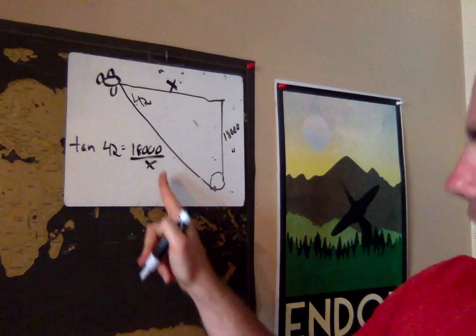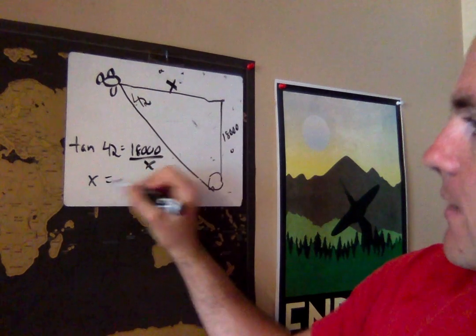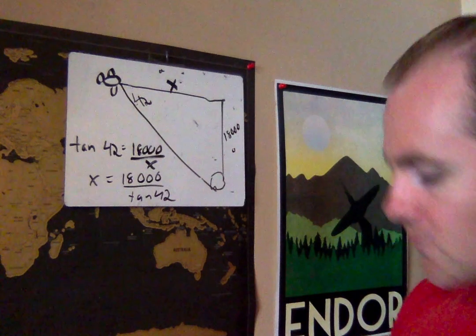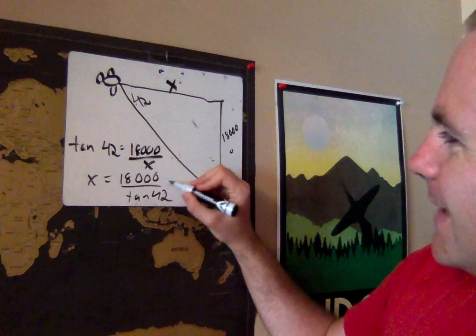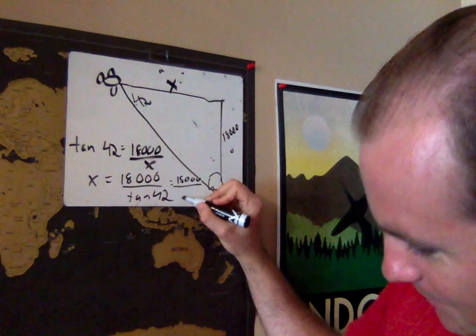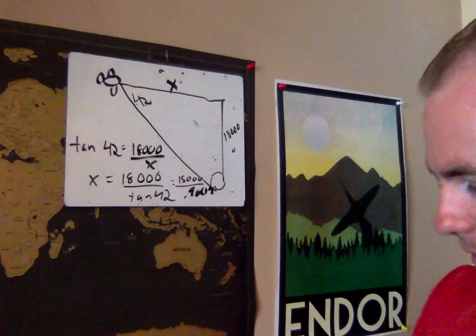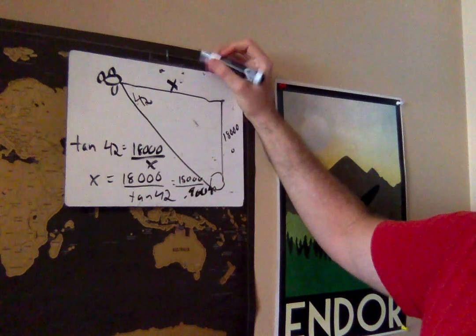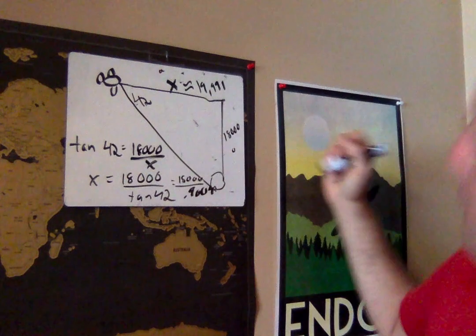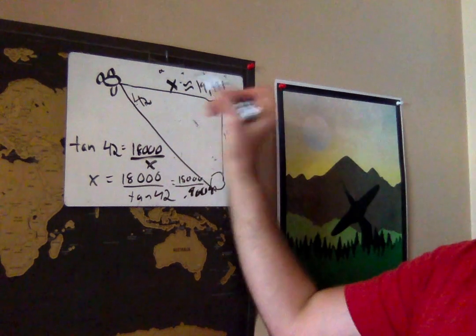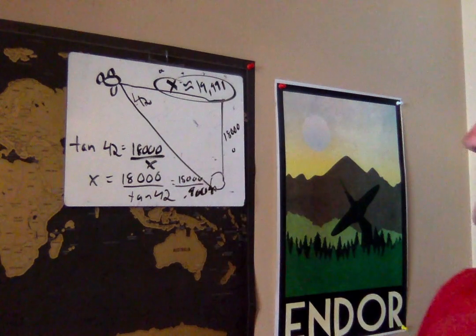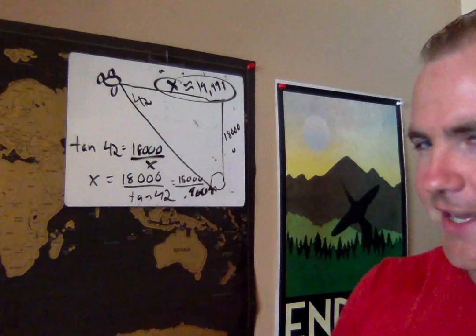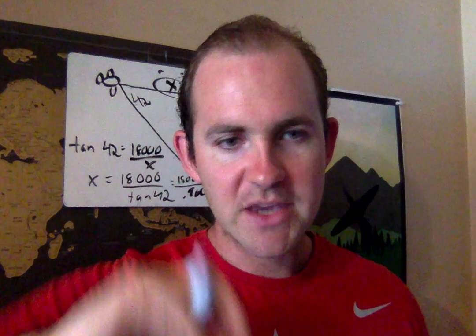Using our algebra trick, if I have this variable on the bottom, I can switch it with this tan 42. And so I get x is 18,000 over tan 42. I'm actually going to do this the long way. I know some of you guys prefer to do this in one step. I put 42 in the calculator and I hit tan. It's over 0.9004. So I will do 18,000 divided by 0.9004 and I get around 19,991. So x is around 19,991 feet. Some of you guys are probably wondering where the heck did I get this decimal? I put 42 in the calculator and I hit tan. That's how I got that.